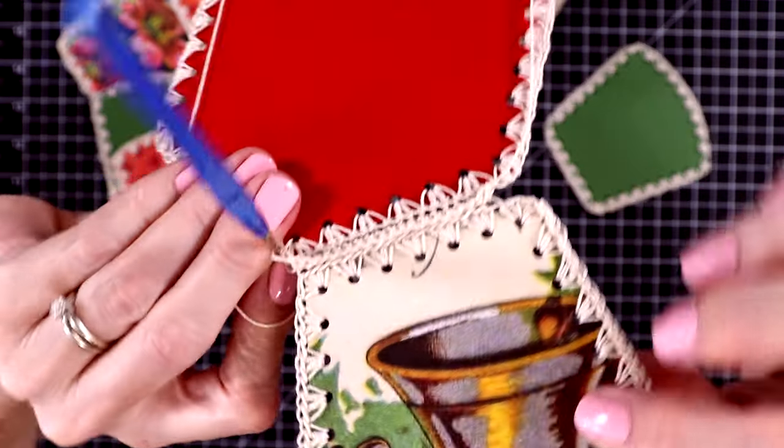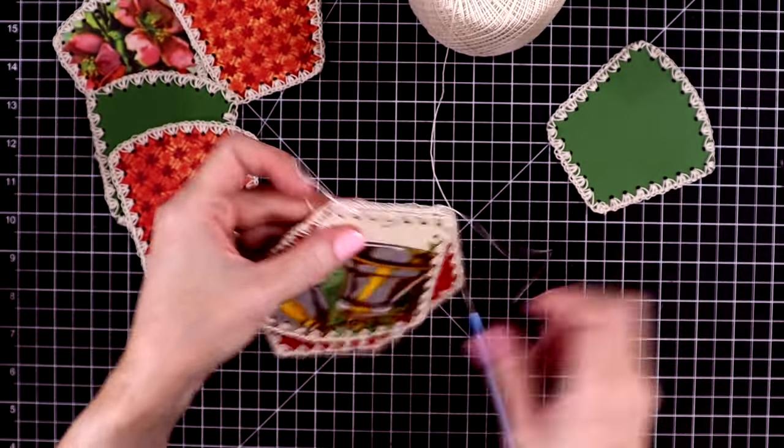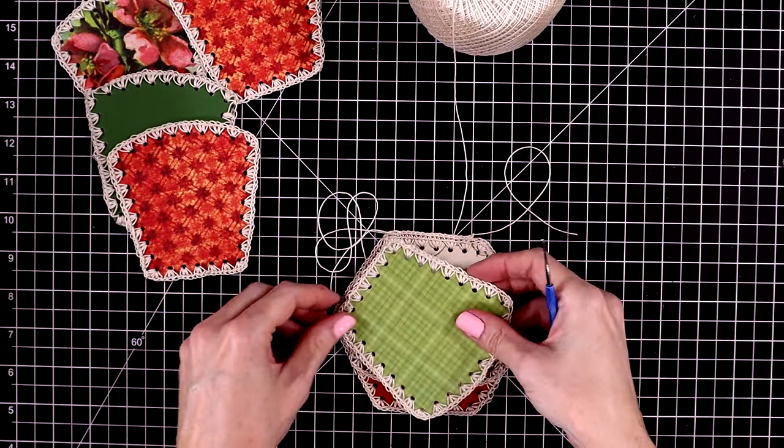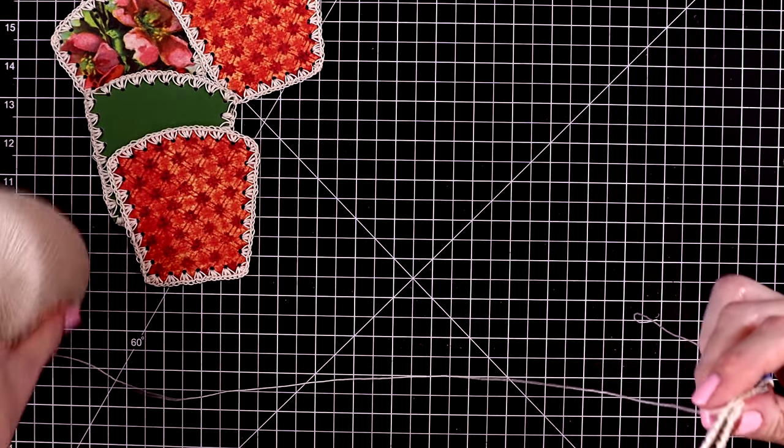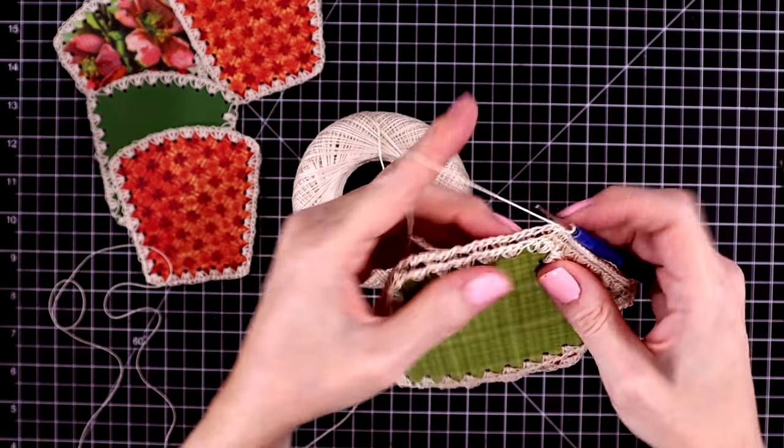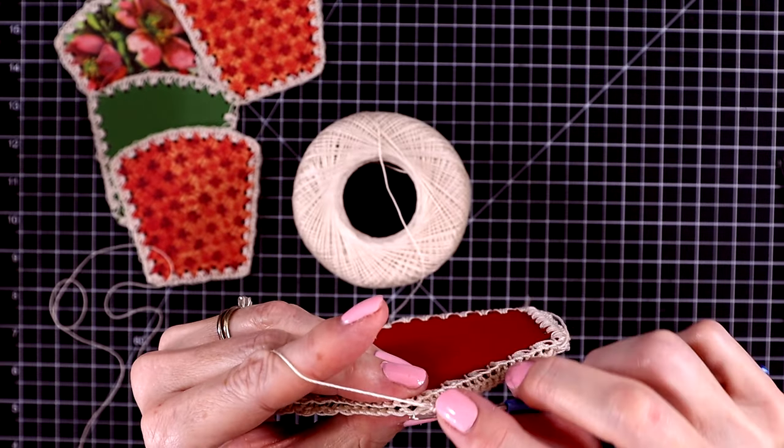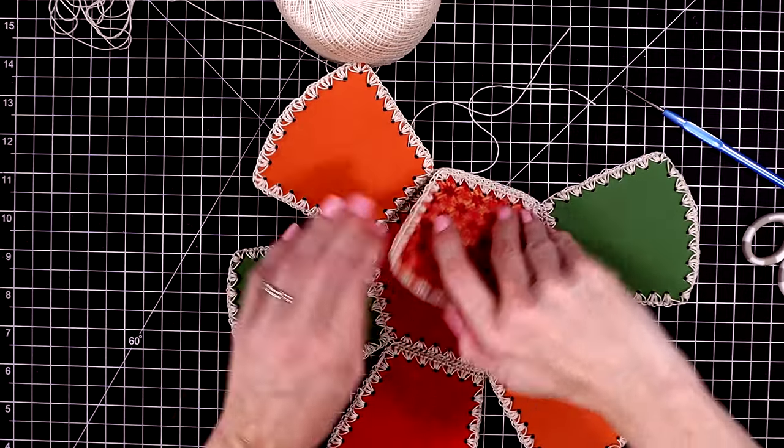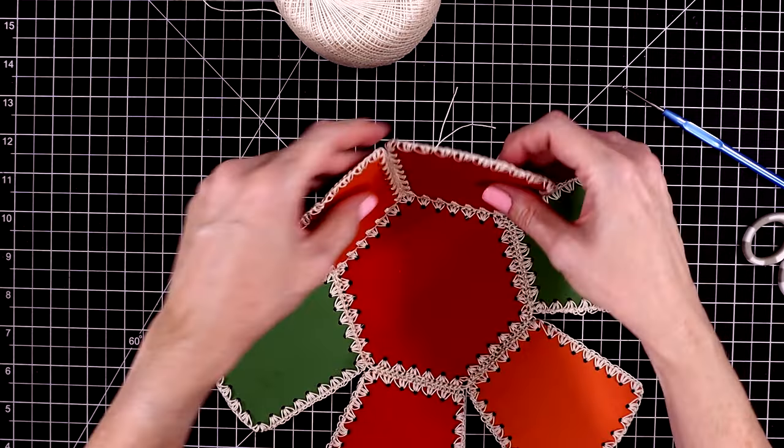And here is the first panel all connected. I'm going to keep my yarn attached and just start crocheting into the next panel. I'll again line up the stitches and I'm just going across the bottom. I'll do this with all of the panels. And it doesn't have to be perfect, you can get away with a lot on crocheting around these. Okay, so here it is all done along the bottom of this bowl.